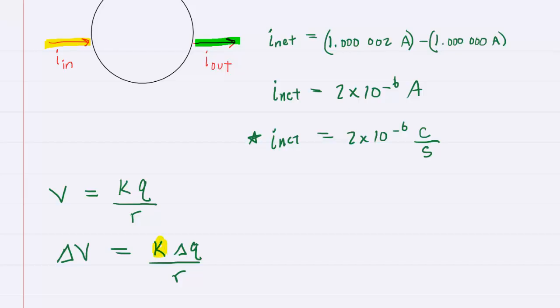Now, we know k, it's a constant. We can look that up in our textbooks. We know the radius of the sphere because it's given to us. What we don't have yet is the amount of charge that is traveling onto the sphere. But we did learn in this chapter that current is defined as the change in charge divided by a time interval.